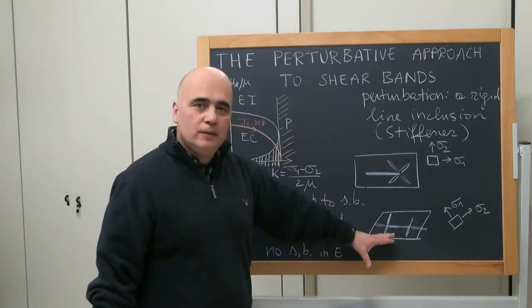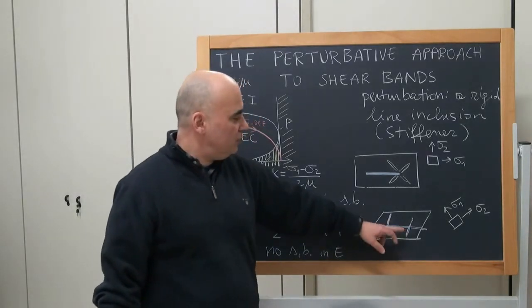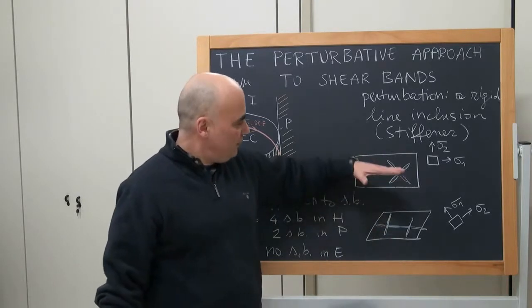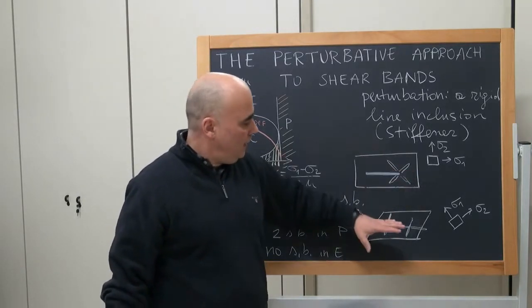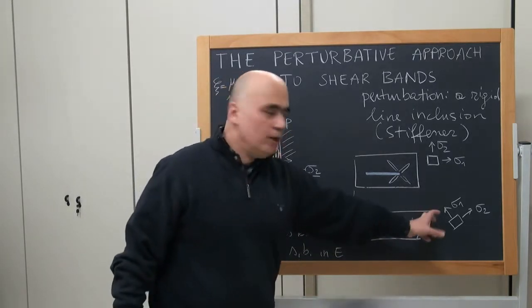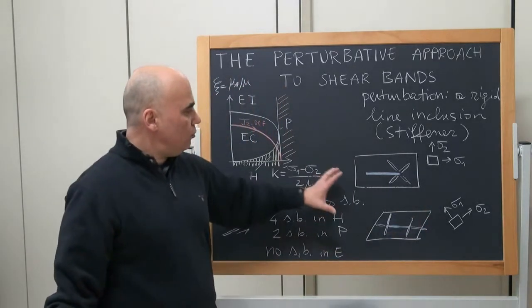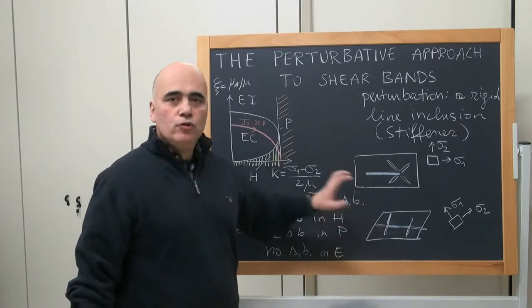There is no symmetry here. The difference in the inclination of these shear bands came from the fact that there is this axis of symmetry and there is no symmetry here due to the inclination of pre-stress. Let's look now at these two situations.